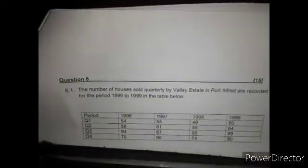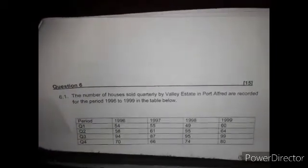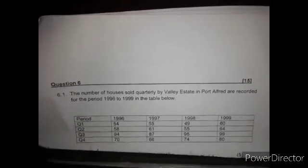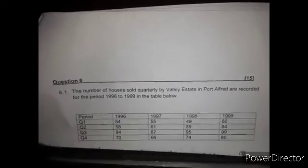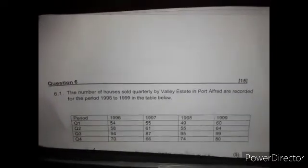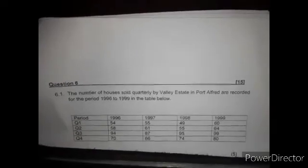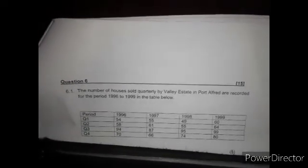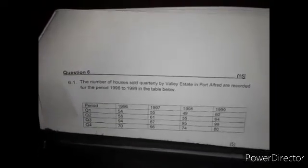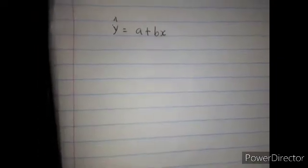Question 6, 6.1. The number of houses sold quarterly by Voli Estate in Port Alfred are recorded for the period 1996 to 1999 in the table below. Now determine the trendline equation using the sequential numbering method. There's the trendline equation.